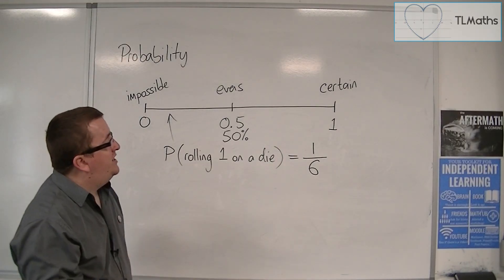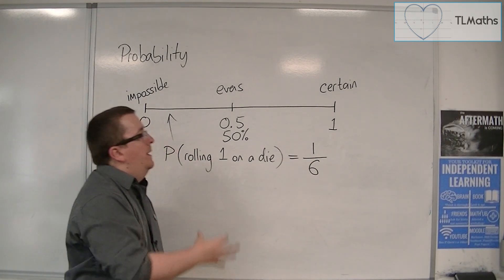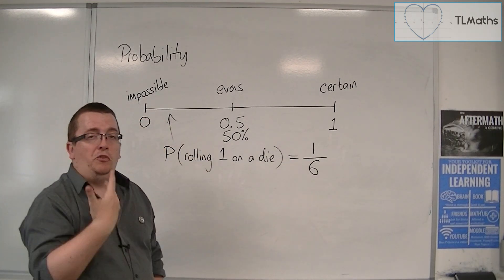And so, probability really stems back to this concept. All probabilities go between 0 and 1, and can be given as fractions, decimals, or percentages.